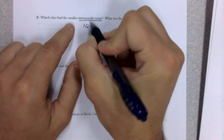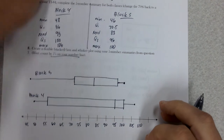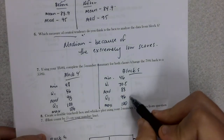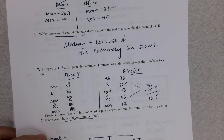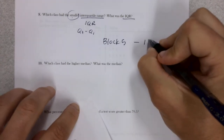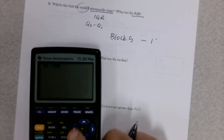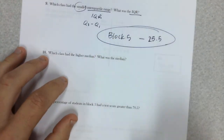Question: which class had the smaller interquartile range? The IQR is Q3 minus Q1. Visually, just look at the box — Block 5 had the smaller one. The IQR for Block 5 is Q3 minus Q1: 96 minus 70.5. Using the calculator to be safe, that gives us 25.5 as the IQR.